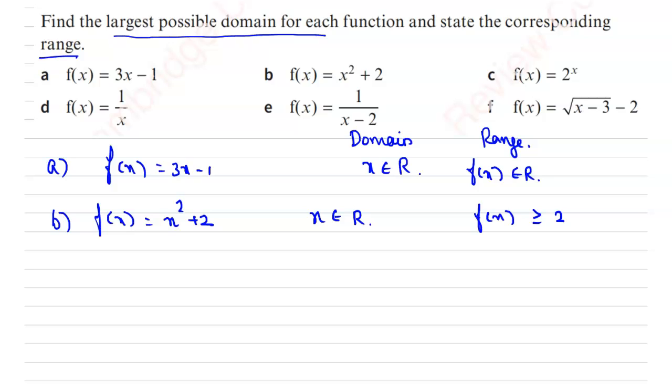Because if we substitute here 0 we will get f of x is equal to 2, and because we are having a quadratic function, all the values, whatever may be, either negative or positive, we will get only the positive result. And for x equal to 0 we will get f of x equal to 2, therefore the range will be f of x greater than or equal to 2.